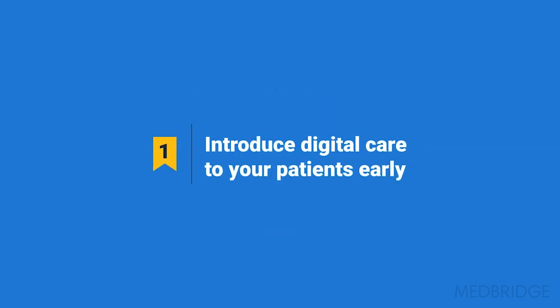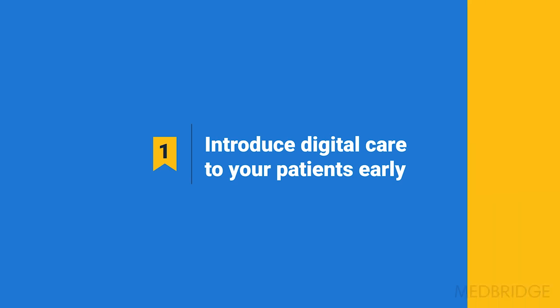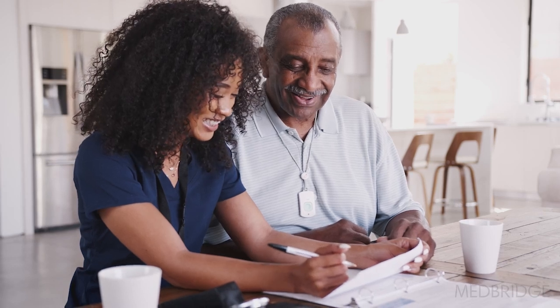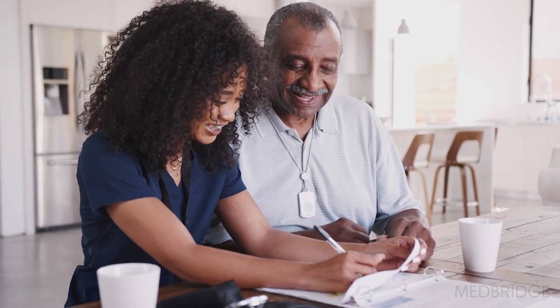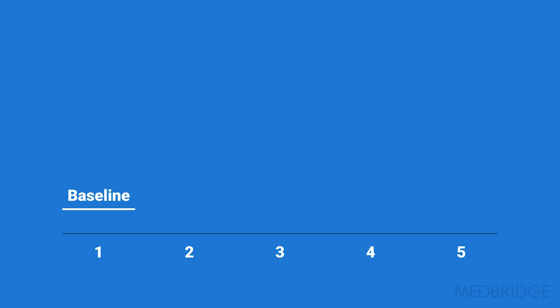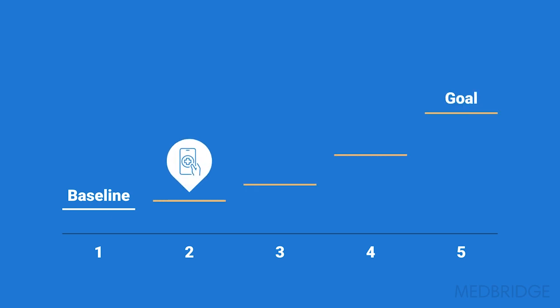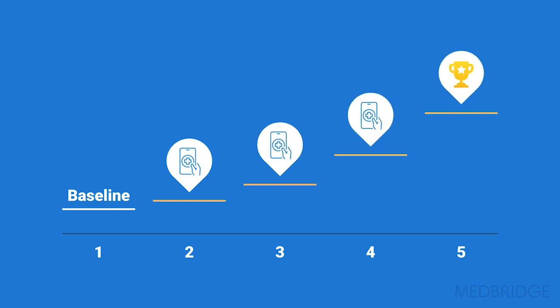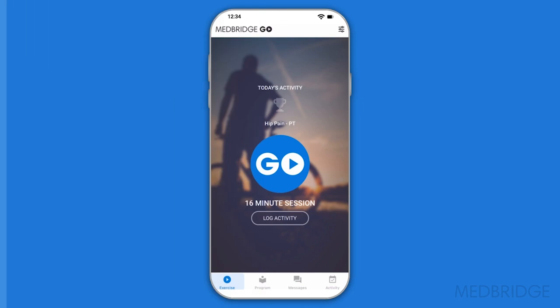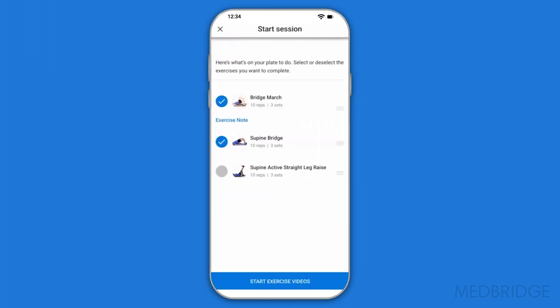First, you want to introduce digital care to your patients early in their episode of care. By bringing it up early and often, it feels like a normal part of care rather than something new and intimidating. You're probably going to discuss the overall recovery program during the first appointment, and you can get your patient to buy in by describing the digital program during this step, focusing on how it can help them reach their goals more effectively. You can even give them a sneak peek by showing an example program on your computer or pulling up the app on your phone.